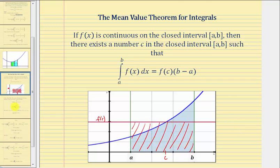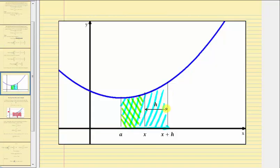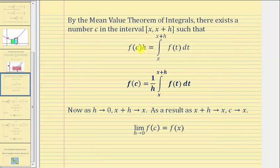Going back to our proof, by the Mean Value Theorem for integrals, there exists a number c in the closed interval from x to the quantity x plus h such that f of c times h is equal to the definite integral. Remember, h is the width of the interval. So c might be somewhere in this interval, where f of c — the height of the rectangle — times the width h would equal the value of the definite integral. Multiplying both sides by one over h, we have f of c equals one over h times the definite integral.